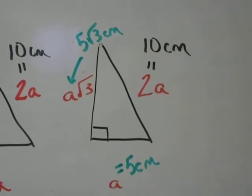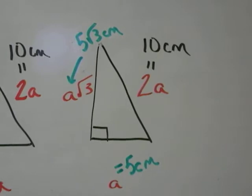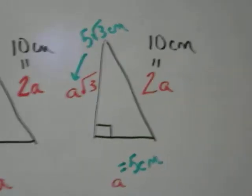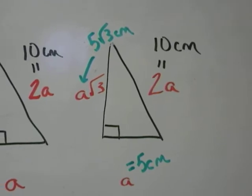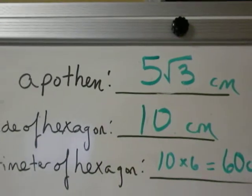Now how much is the side of a hexagon? Well that's right, it's always the same length as the radius or the hypotenuse of our special right triangle. So the length of a side of this particular hexagon is also 10 centimeters.